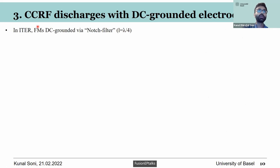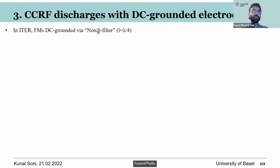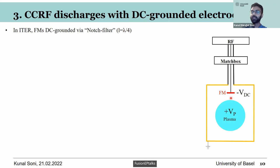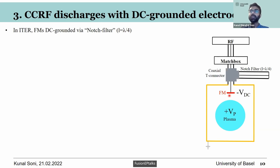Now I'll jump to first mirror cleaning via notch filter, which is a major part of my PhD work. The first mirrors in ITER's optical diagnostic systems could be implemented in the presence of a notch filter. What this means is that you attach a coaxial cable in series with the first mirror and short-circuit the inner and outer conductors of the coaxial cable. This short-circuits the capacitance that originally existed, and as a result, the DC potential that would normally develop on the first mirror goes to zero.